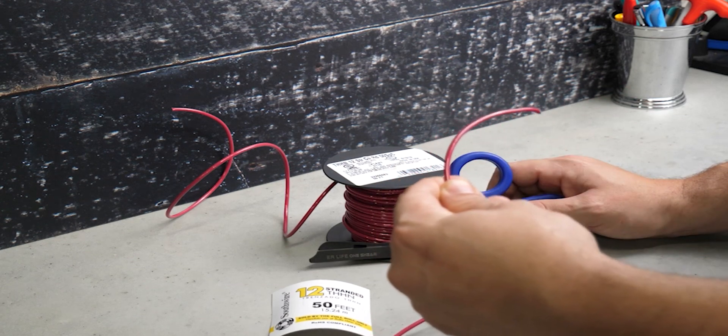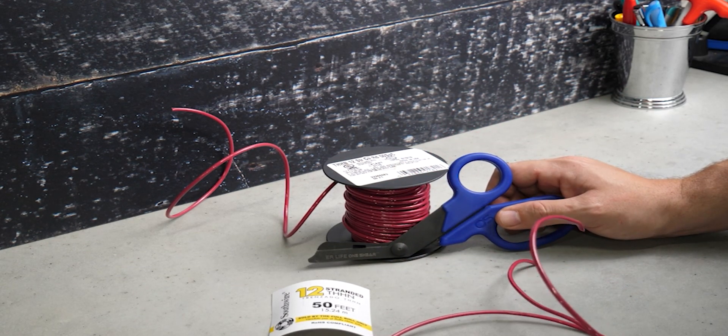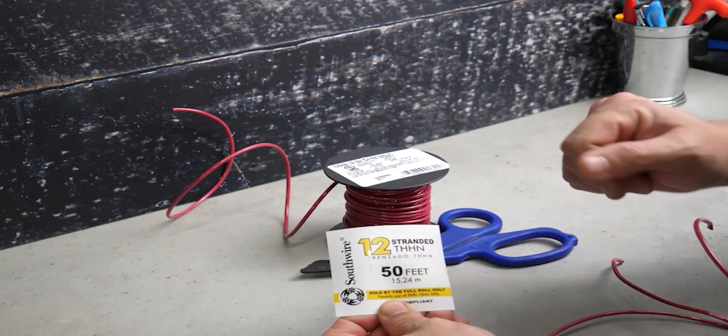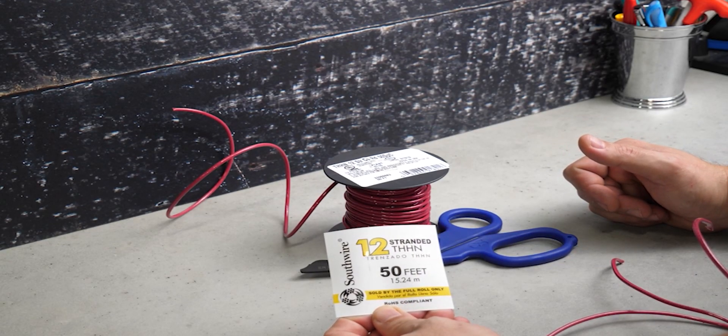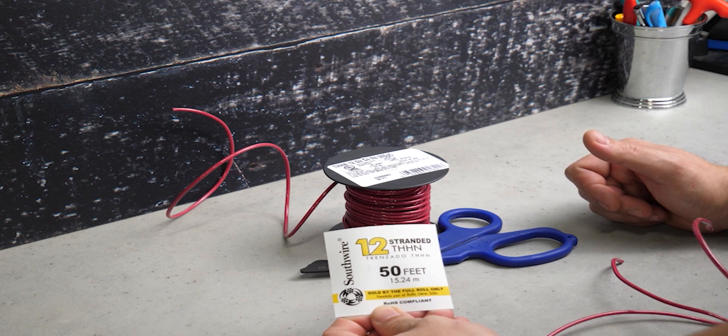To do that, we actually need some wire. So I need some wire to wire this up. Today we have 12 stranded THHN. So basically you have a 12 gauge strand here.